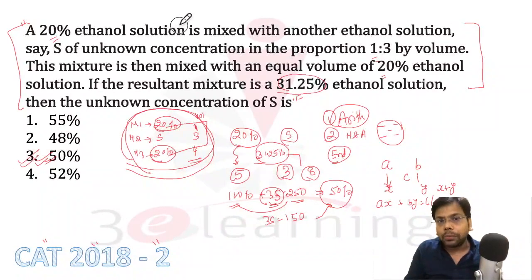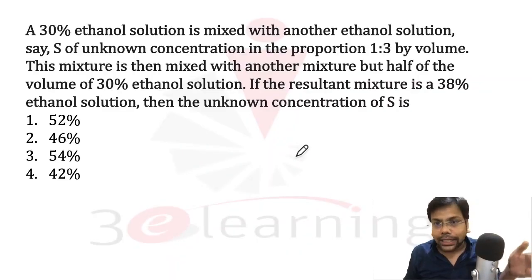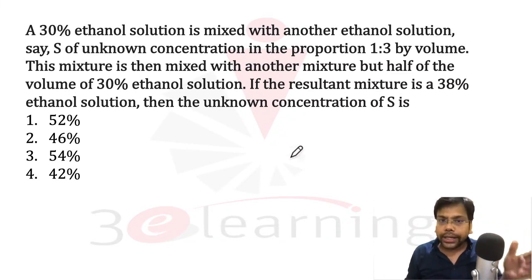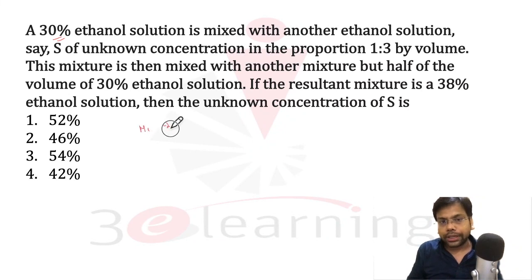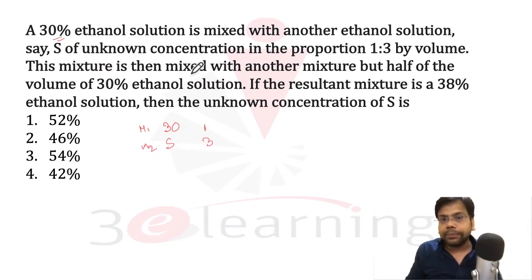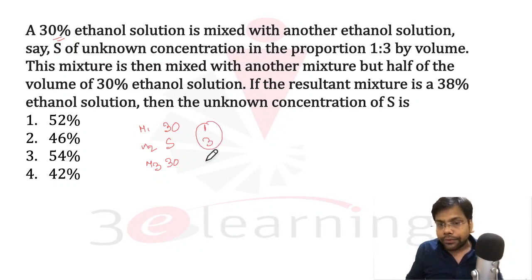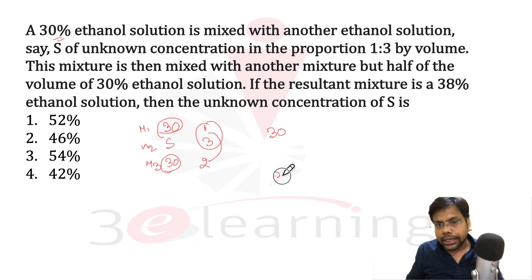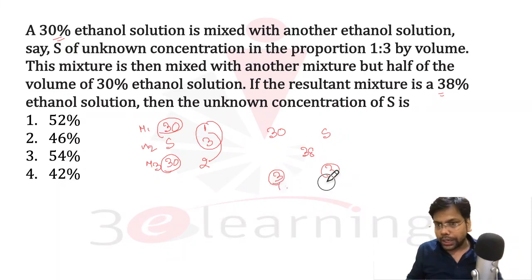This is my way of solving this question. You should practise mixture alligation. Now for practice, I am going to solve another question. We have a 30% mixture 1 mixed with mixture 2 in ratio 1:3 by volume. This mixture is then mixed with another mixture — but half of the volume. Mixture 3 is also 30%, but half the volume, so 2 litres. 30% × 3 litres is mixed with S% × 3 litres — both volumes are equal. And the result is 38%.